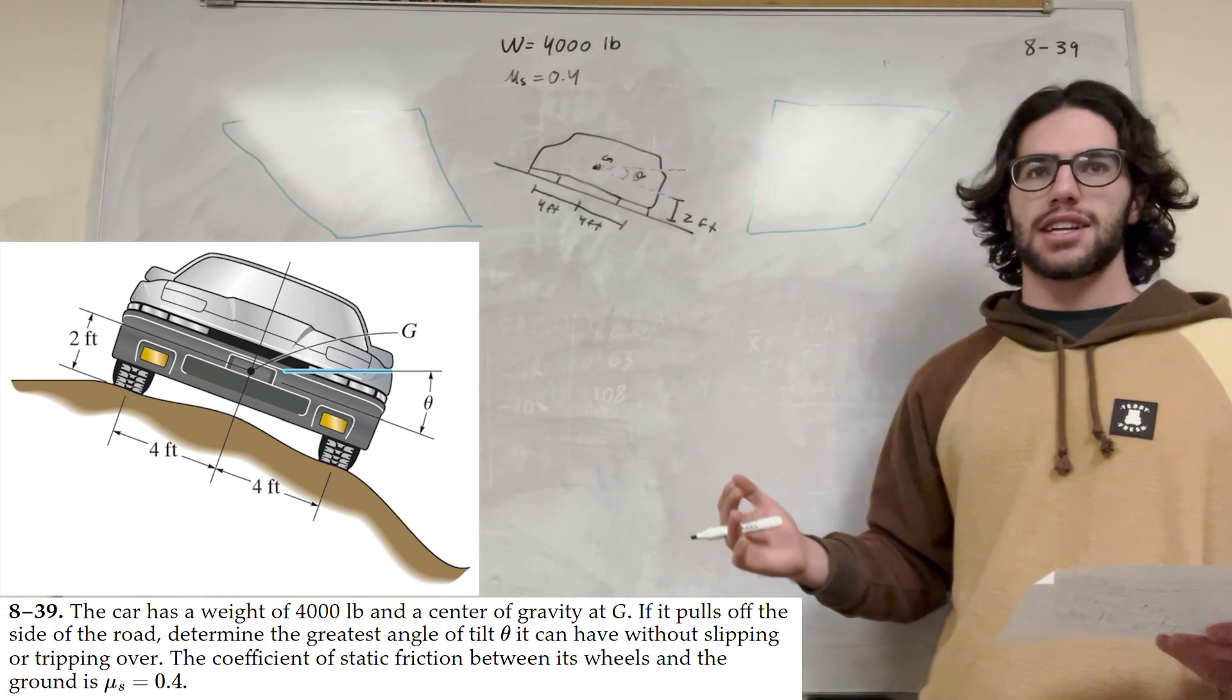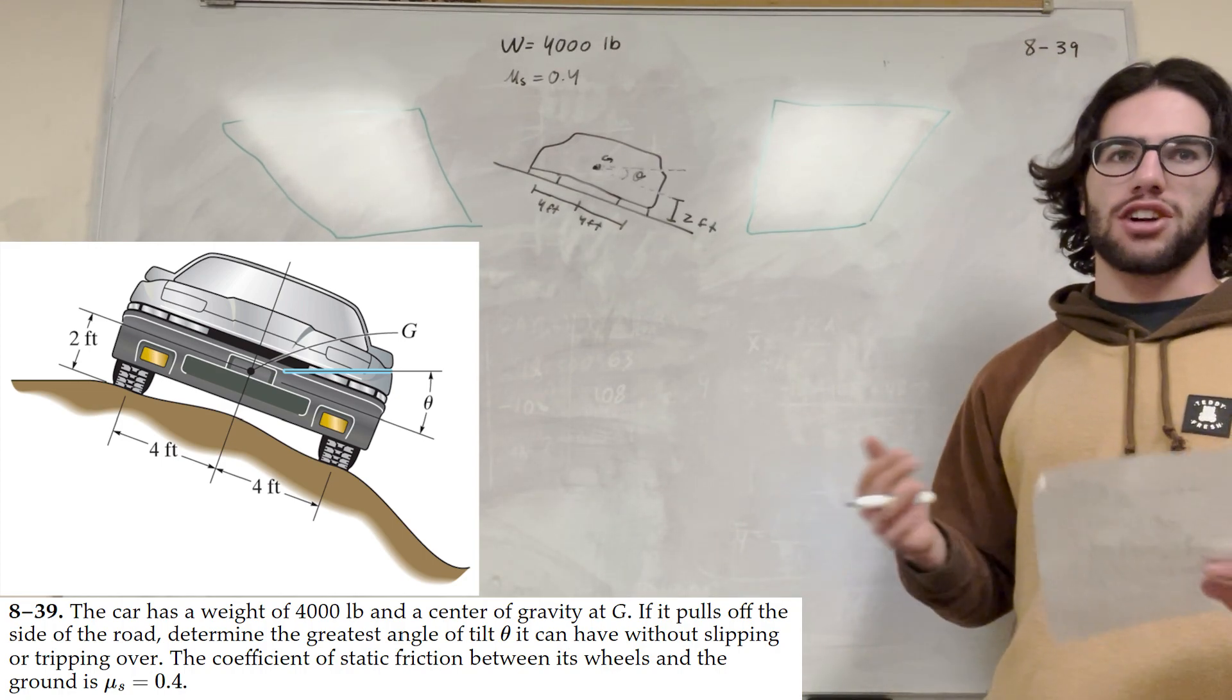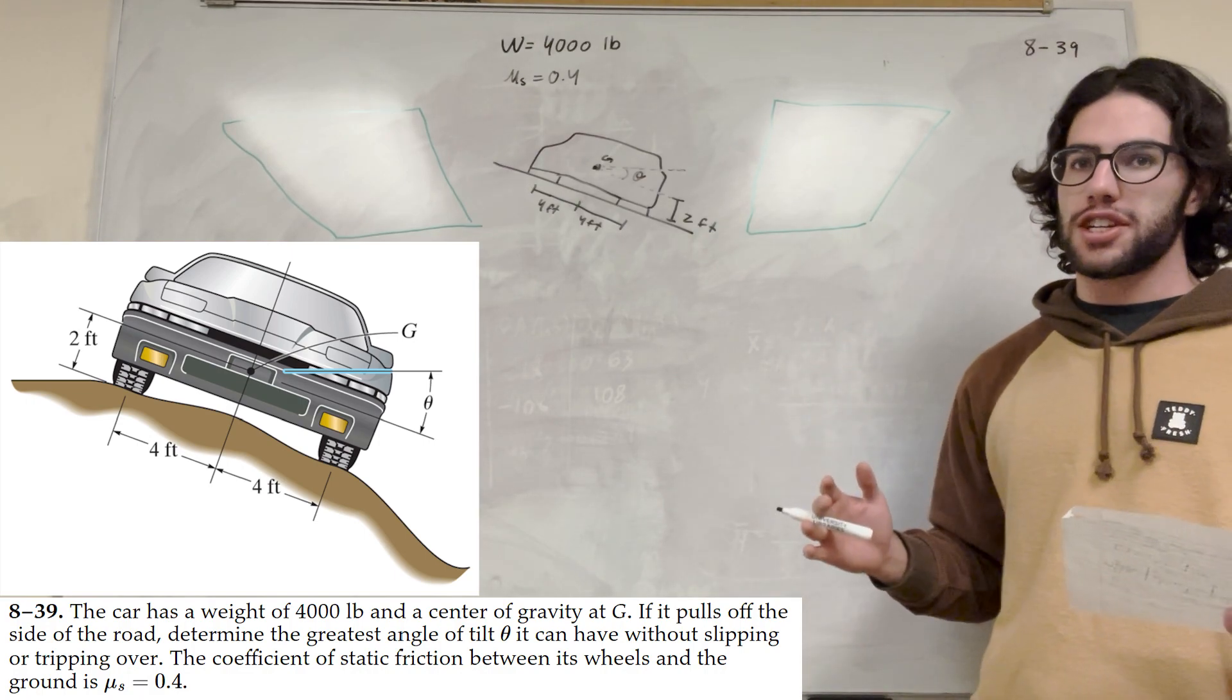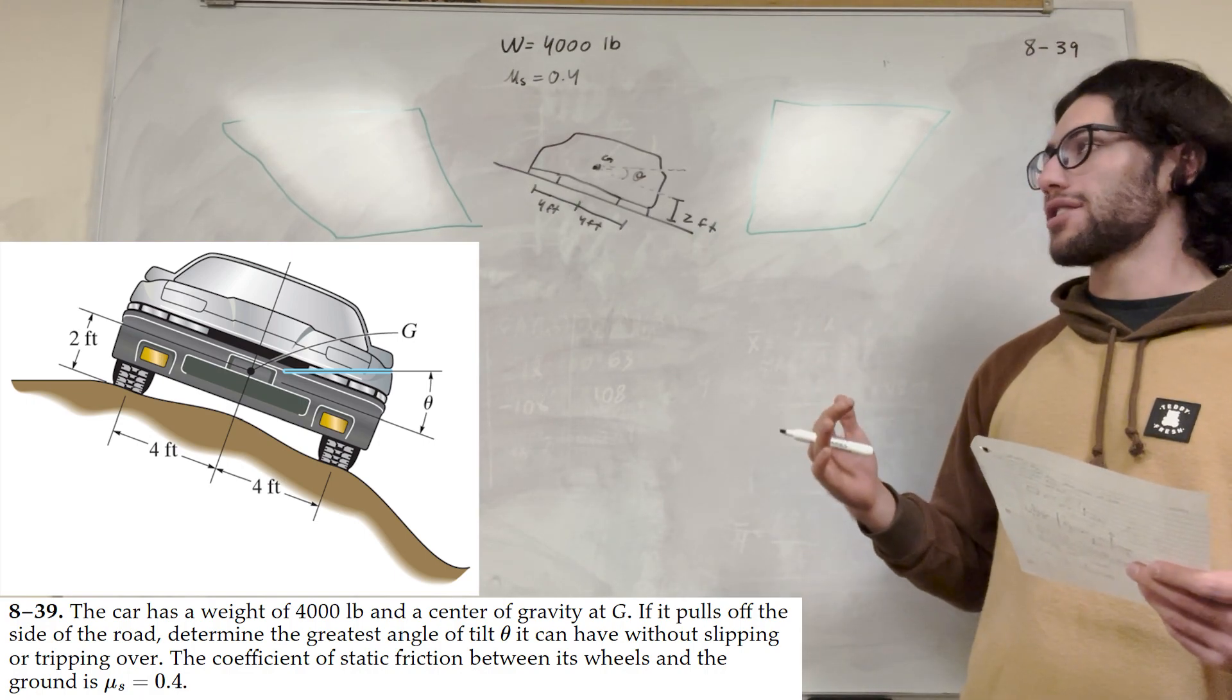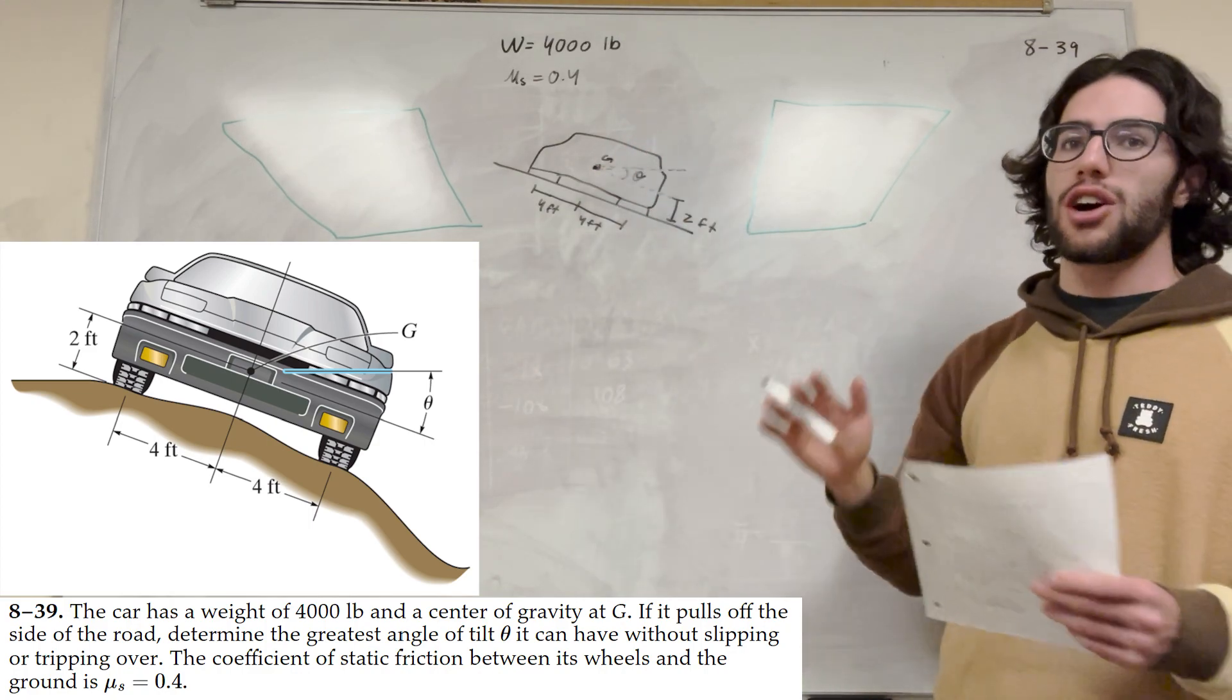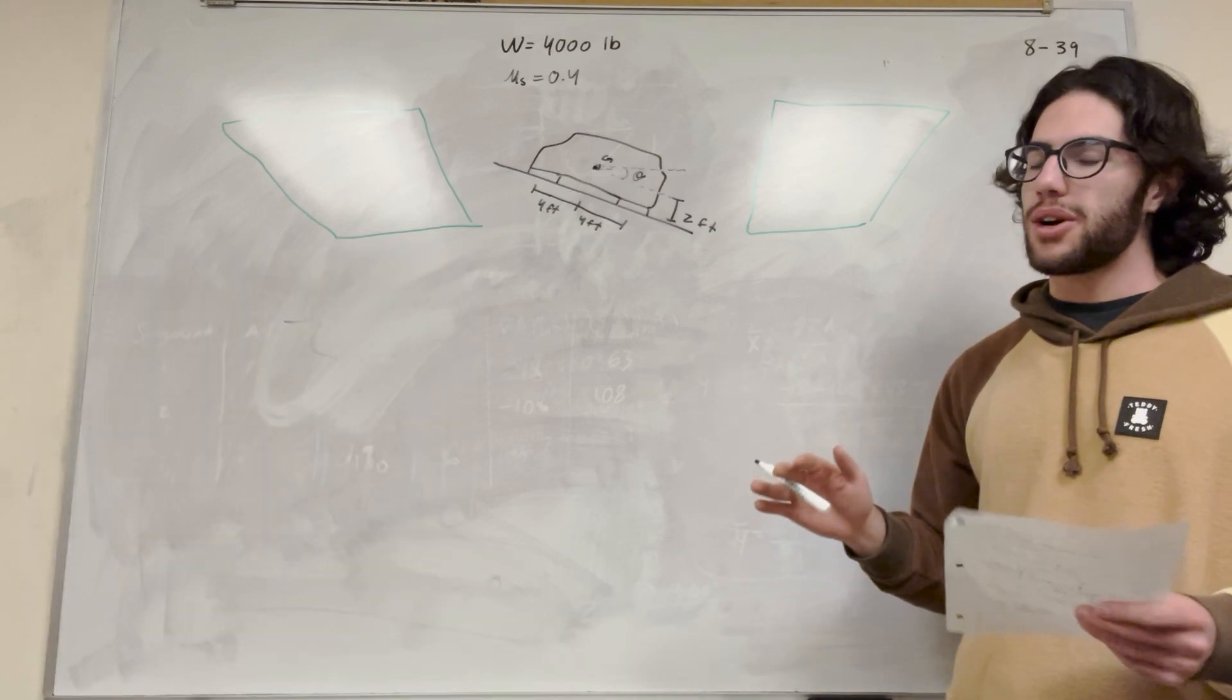What's up Calc gang? Alright, so we got a statics problem here. We have a car driving at an angle and it tells us the weight of the car is 4,000 pounds and the coefficient of static friction between the tires and the ground is 0.4, and wants us to find this maximum angle at which the car is no longer going to tilt. So let's go ahead and do it.